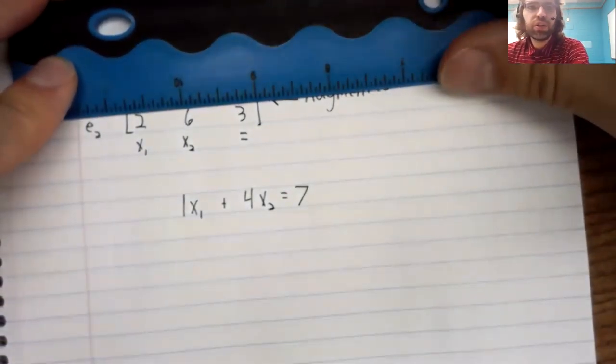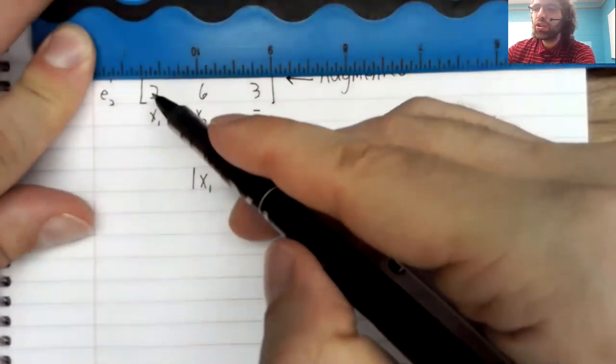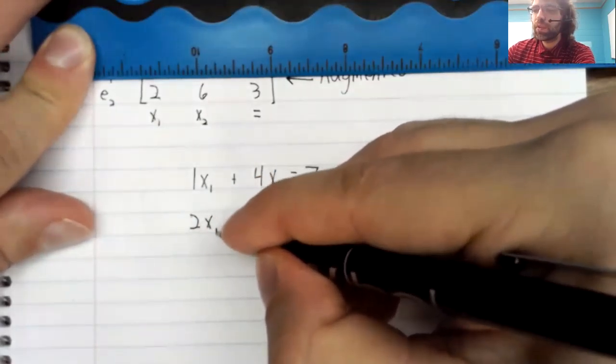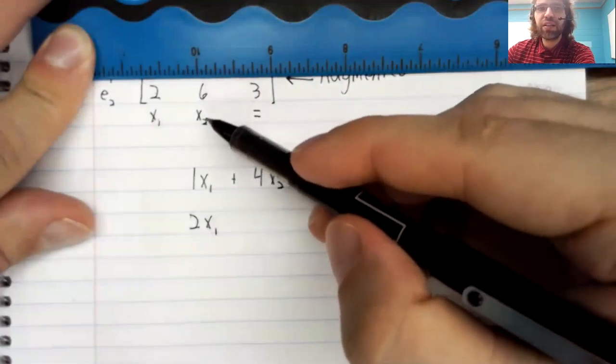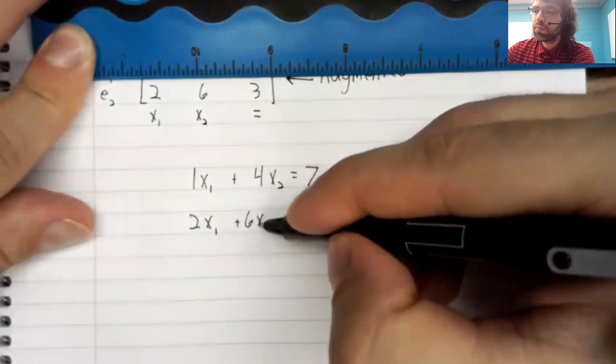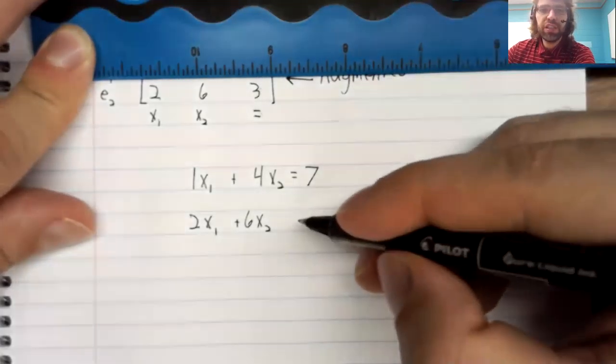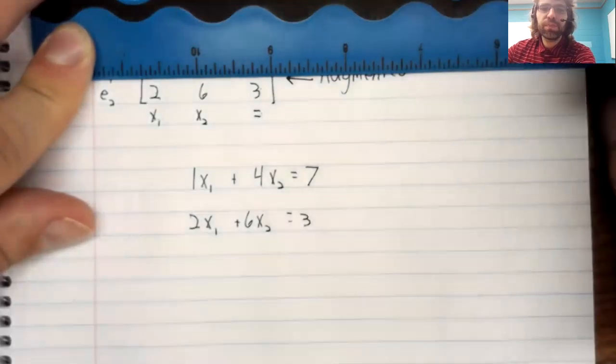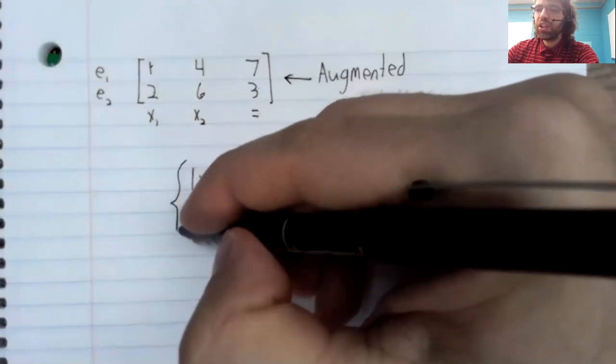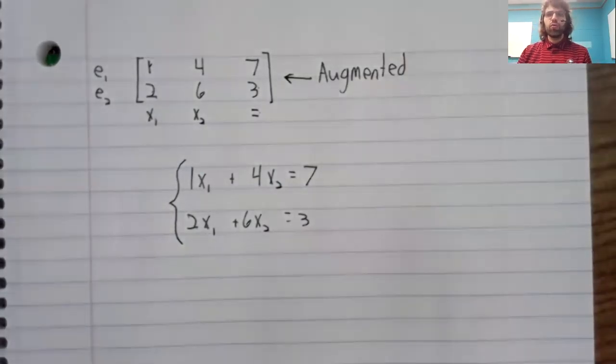For the second, we look at the second row: 2x1 plus 6x2 equals 3. And there is the system of linear equations that this matrix was storing.